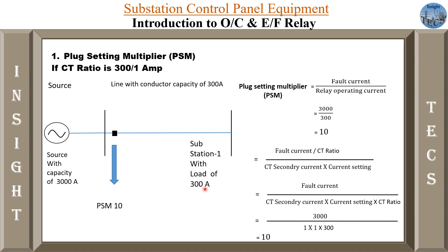The formula now comes down to fault current divided by CT secondary into current setting into CT ratio. In the example we are discussing, the fault current is 3000 amperes, CT secondary current is 1, current setting is 1 because we are having 100% setting, and CT ratio is 300 by 1, so it is 300. PSM comes down to 10, and from the IDMT curve, if PSM equals 10, then the time taken will be 3 seconds.